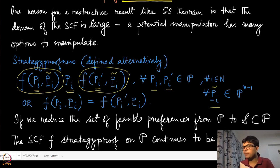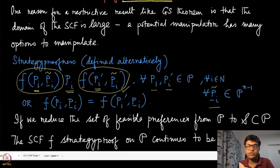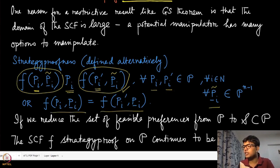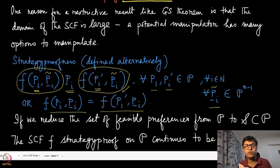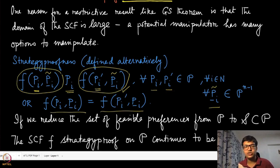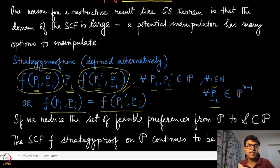We can use tilde to denote that other players might misreport their preferences — it does not really matter. In that sense it is quite equivalent to dominant strategy incentive compatibility, as remarked earlier. No matter what the other players are doing, reporting your true preference ordering is strictly beneficial for agent i. The other alternative is that even after misreporting, you might not be able to change the outcome, so there is no question of preferring one over the other.